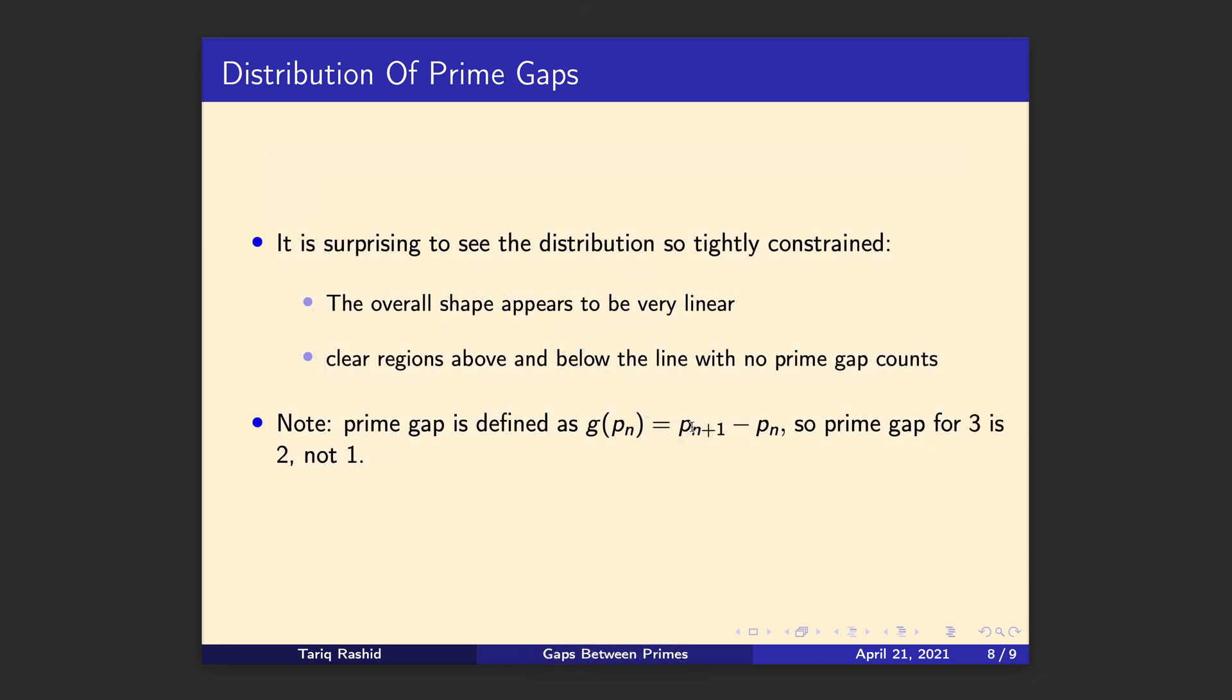So let's summarise what we've picked out from that distribution. The overall shape is really linear, and that should pique our interest. To me, it's surprising, but it should certainly pique our interest. And it's quite tightly defined, which means there's something going on about the arithmetic of the primes that's keeping that distribution fairly tightly defined. And we should explore that. We should dig into why that is.